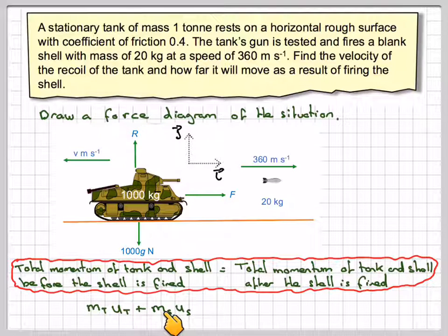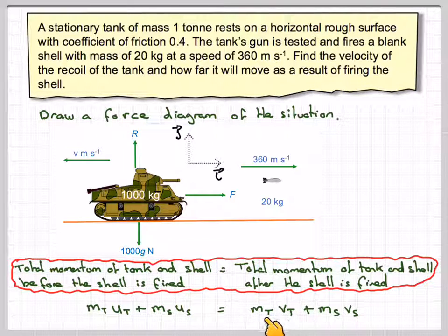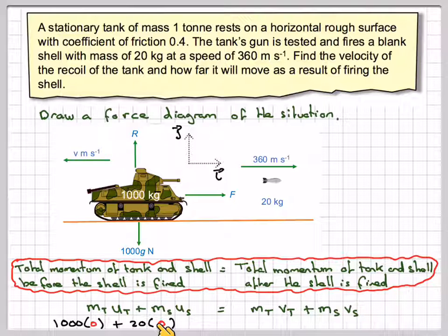MTUT plus MSUS equals MTVT plus MSVS, with MT being the mass of the tank, VT being the velocity of the tank, MS being the mass of the shell, and the velocity of the shell being VS. Putting the numbers in, we've got 1,000 times 0 plus 20 times 0 is equal to 1,000V plus 20 times 360.